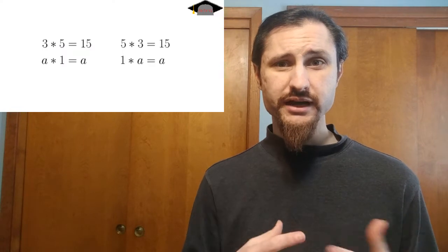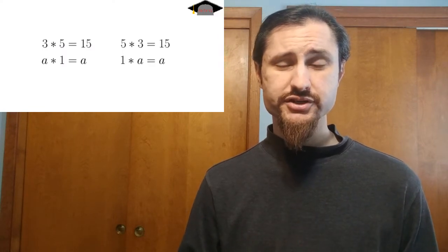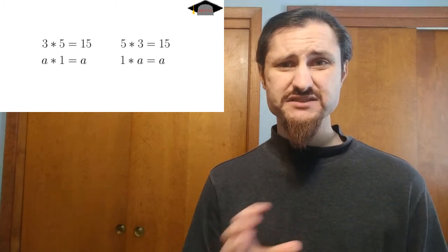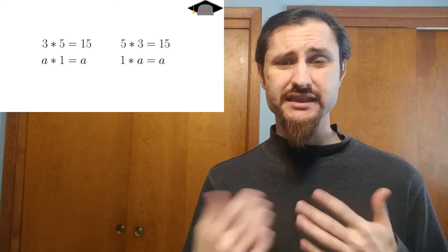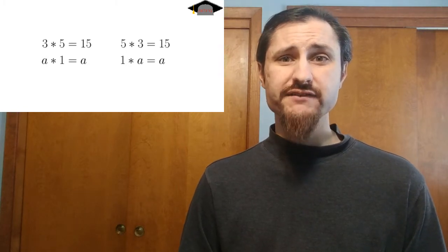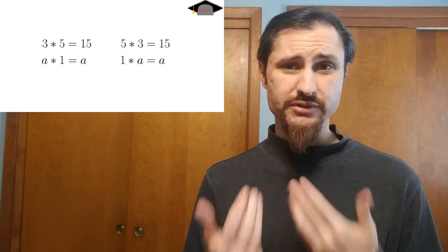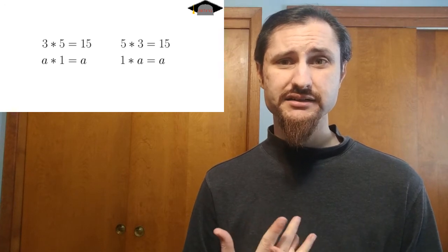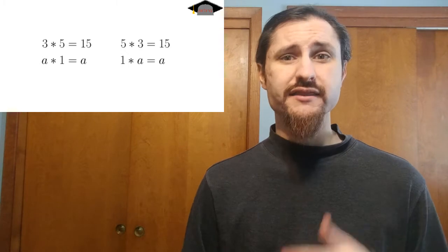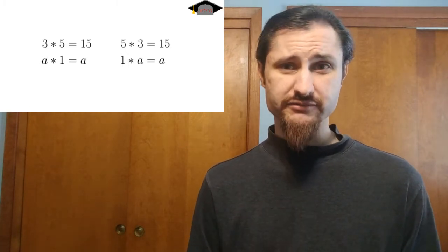But not only can we do addition and subtraction with these integers, we can multiply them as well. Every two integers, we can multiply them together and get another integer. This multiplication behaves nicely with respect to addition. By that, I mean we have the distributive property. We have a multiplicative identity, the number one. If you multiply any integer times one, it doesn't change. This multiplication is even commutative.